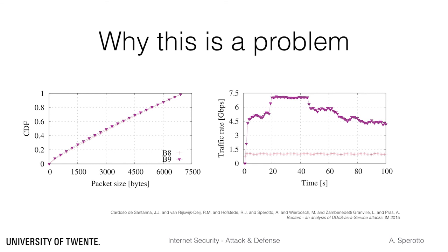If we look at the traffic we captured for those attacks, we can easily see 7 Gbps of attack traffic. A deeper investigation has shown that hosts with such amplification characteristics are related to a particular Chargen implementation in Windows systems.